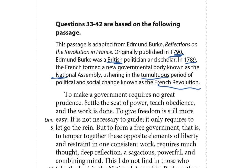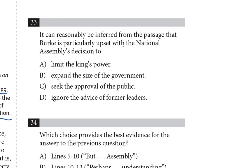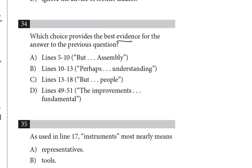The next step is to skim and survey the questions. I'm going to see if there's anything to be gleaned from a super quick skim. I'll underline key words in the questions and mark things in the margins, making what we call a map of the passage. I'm going to do this with an extremely light touch. Question 33: it can reasonably be inferred that Burke is upset with the National Assembly's decision to blank. I'll underline 'upset' and come back after reading the first paragraph. Question 34 is asking for evidence for the previous question, so I'll come back to this later.